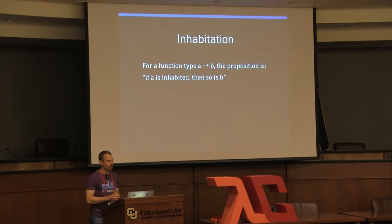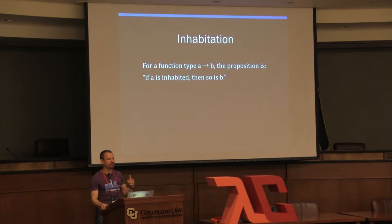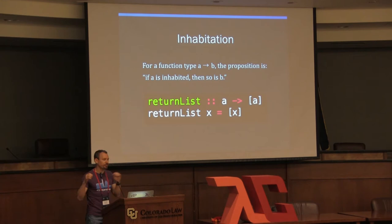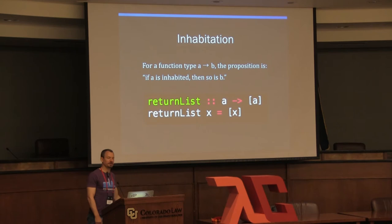For a function type A to B, the proposition is: if A is inhabited, then so is B. Or from a more constructive perspective: given some value x of type A, we can construct a value y of type B. For example, 'returnList' says: given some x of type A, I can give you a value of type List of A. The proof is easy — you just take the value and wrap it in a list.